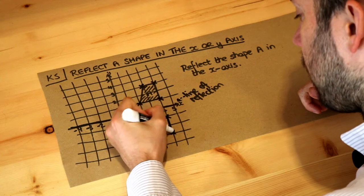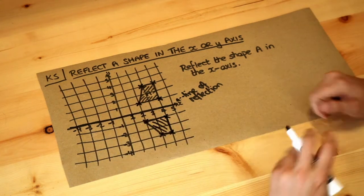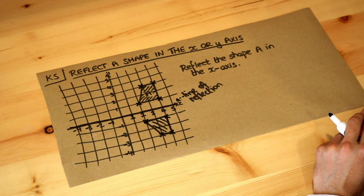And then we can join it up. I'll just shade it in. And that is our reflected shape. And then we have to do this again.